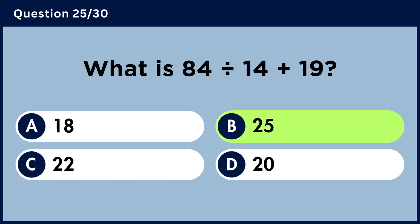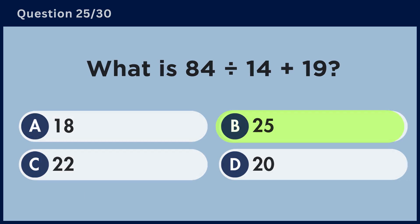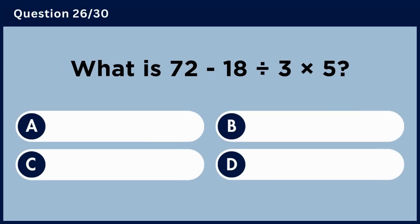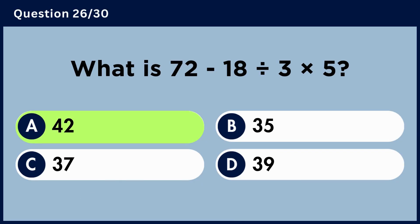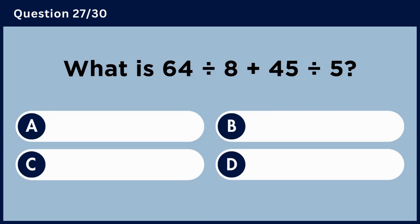What is 72 minus 18 divided by 3 multiplied by 5? Answer B, 25. What is 64 divided by 8 plus 45 divided by 5? Answer A, 42.